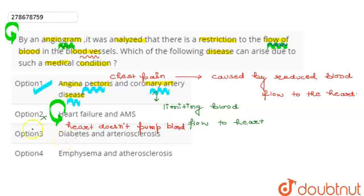The third option is diabetes and atherosclerosis. This option is wrong. Atherosclerosis is a disease where a buildup of many substances blocks the blood vessels.